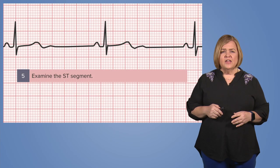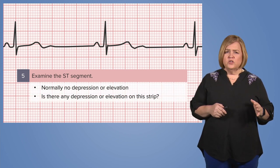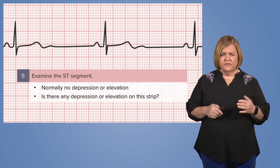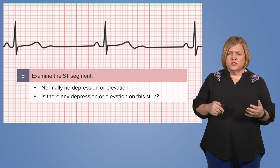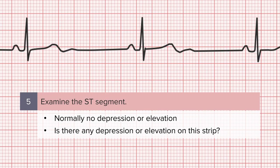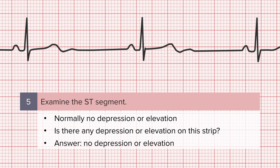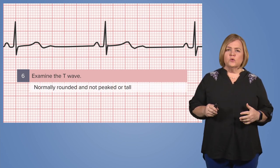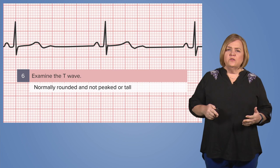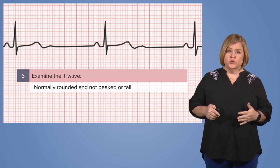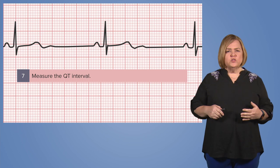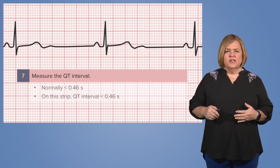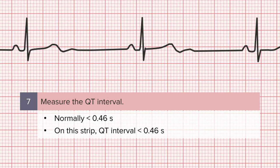Step five: examine the ST segment. Make sure there is no depression or elevation. Compare your answer to the one we display. Step six: take a look at the T wave — in order for them to be normal, you want them rounded and not peaked or tall. Step seven: measure the QT interval. We want it to be less than 0.46 in women and less than 0.45 in men.